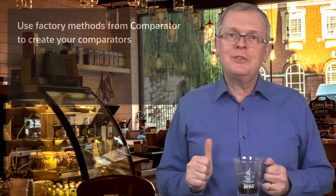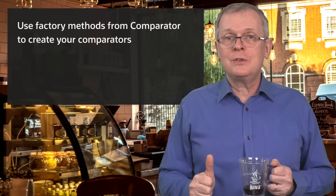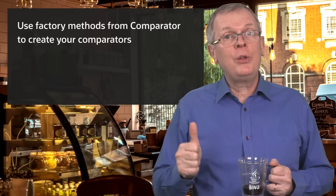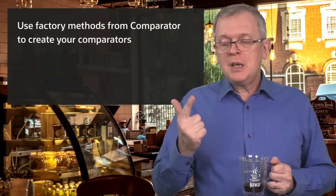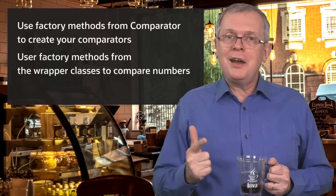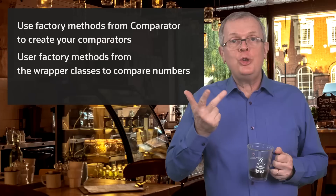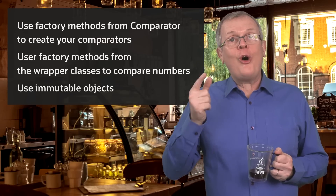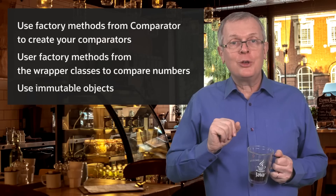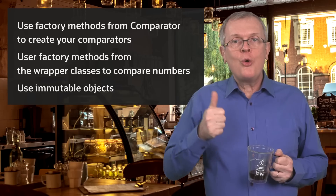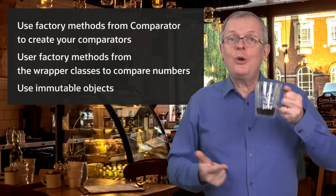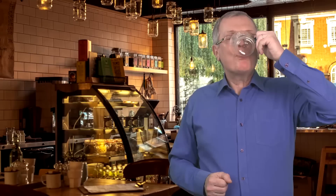Let us make a quick wrap-up. Use factory methods from the Comparator interface to create your comparators — you can also chain them with the available default methods. Use Integer.compare and the like to compare numbers, and nothing else. Use immutable objects when you can, or at least don't rely on mutable fields to compare your objects, whether with equals, compareTo, or a Comparator. And with this, I'm out of coffee — so that's it for today. Talk to you soon.